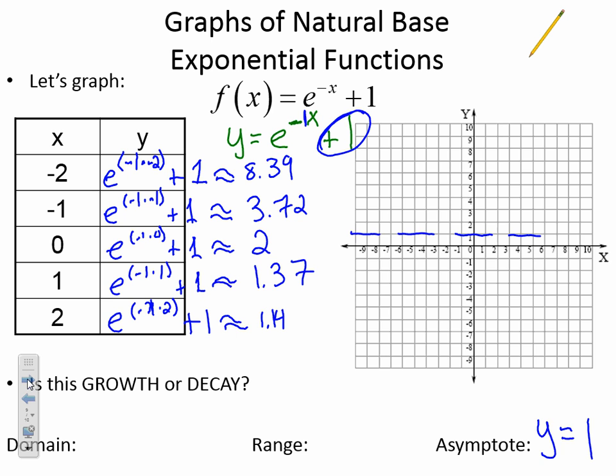And now we're going to graph. So I have negative 2, 8.39, about right there, negative 1, 3.72, 0, 2, 1, 1.37, 2, 1.14. Now, if we look at this graph, if we read it from left to right, we see that we're decreasing. So this one is a decay. This is the decay.